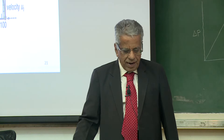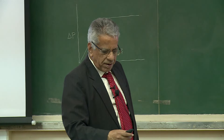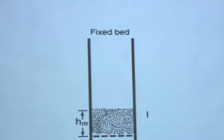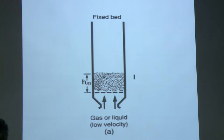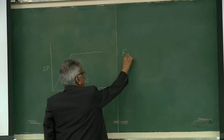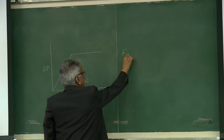For any velocity less than terminal settling velocity, the particles cannot leave the column. Coming to the doubt: at minimum fluidization velocity the force balance is satisfied — drag force equals gravity minus buoyancy — and the particle is self-supported. We have seen this abundant number of times.